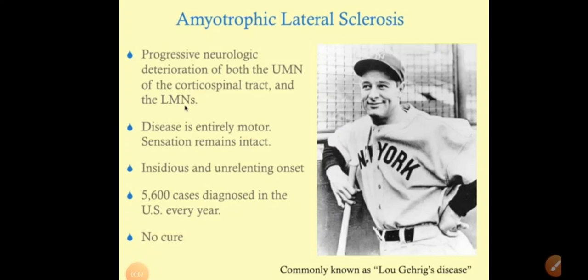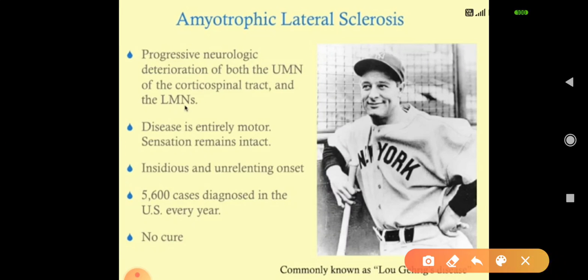Good evening doctors, welcome again. Today we are going to discuss amyotrophic lateral sclerosis. ALS is a progressive neurological deterioration of both upper motor neuron and lower motor neuron of the lateral corticospinal tract. It is called amyotrophic lateral sclerosis because of the involvement of the lateral corticospinal tract.